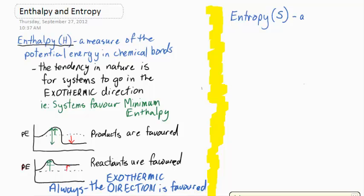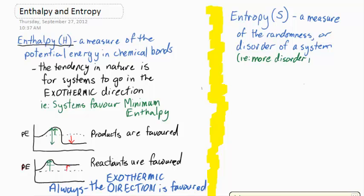Entropy is a completely separate idea. Symbolized by S, it's a measure of the randomness or disorder present in a system. The more disorder or chaos there is, the greater the amount of entropy, which I symbolize with an S.